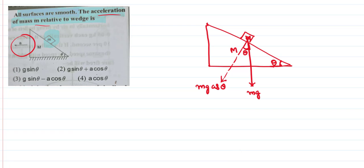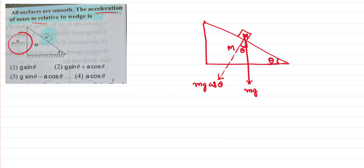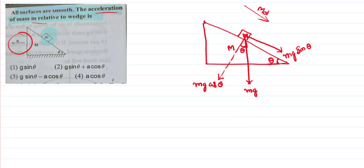The component adjacent to theta becomes Mg cosθ, and the component opposite to theta is Mg sinθ. It is very clear that this block is going to move in the downward direction along the inclined plane. In that direction there is a force equal to Mg sinθ acting on it. That is one part of the problem.